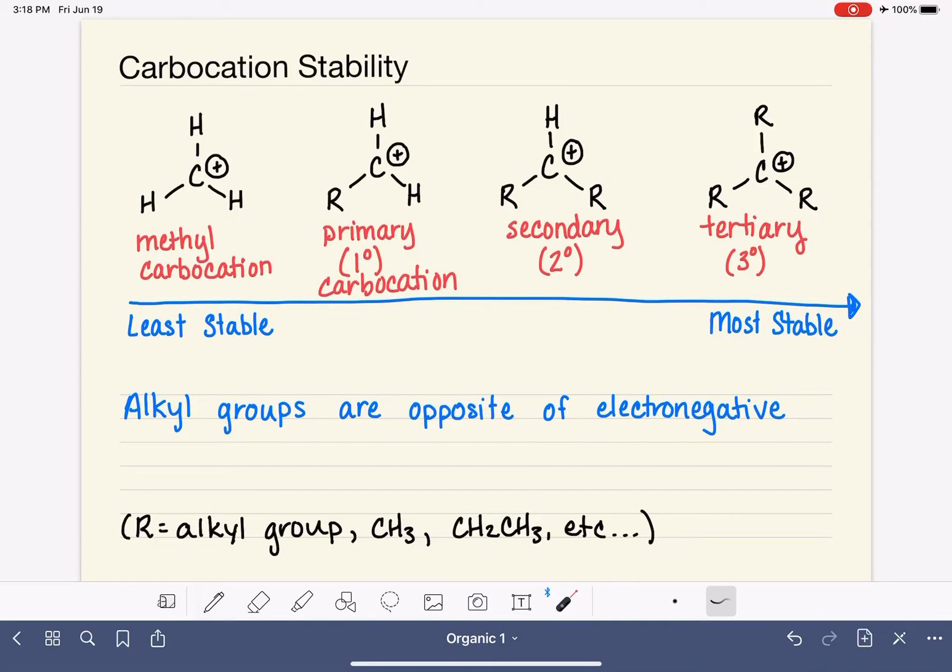Remember that being electronegative, like a halogen, like fluorine, being electronegative means that the atom, the electronegative atom pulls electron density away from whatever it's bonded to towards itself. So carbon-fluorine bond, electron density is pulled towards the fluorine because fluorine is electronegative. Alkyl groups being the opposite of electronegative means that they actually push electrons in. So if we have a situation like this, they actually push electron density away from themselves because they're the opposite of electronegative.